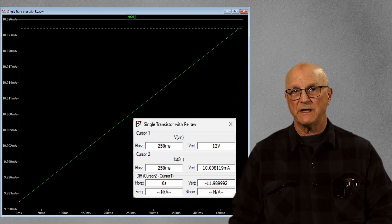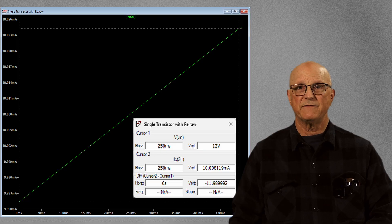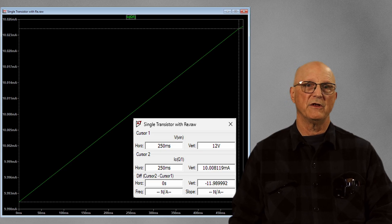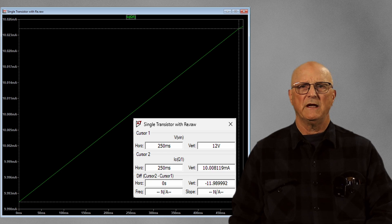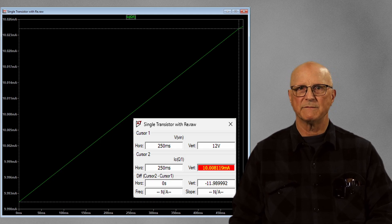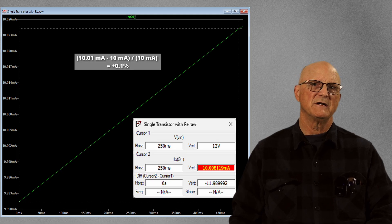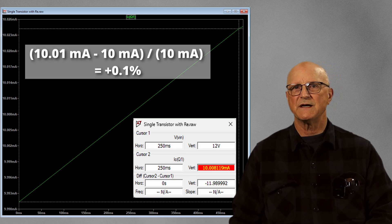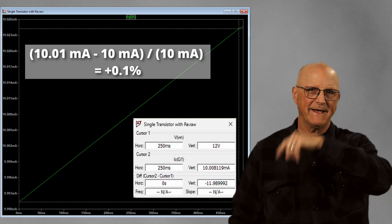Here are the simulation results with the emitter resistor value changed to 433 ohms. With the input voltage at the nominal input voltage of 12 volts, the collector current is 10.01 milliamps. This is a mere 0.1% high. I like it.